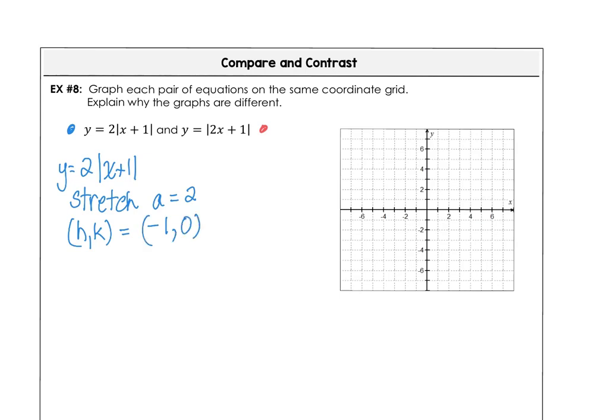The axis of symmetry is at x equals negative 1. We have a stretch factor of 2: 2 up and 1 unit right, then back to the vertex and 2 up, 1 unit left. This is the first graph.